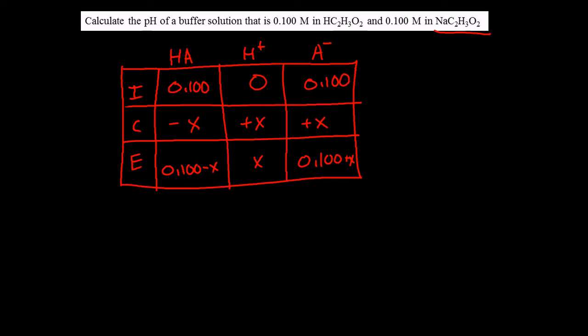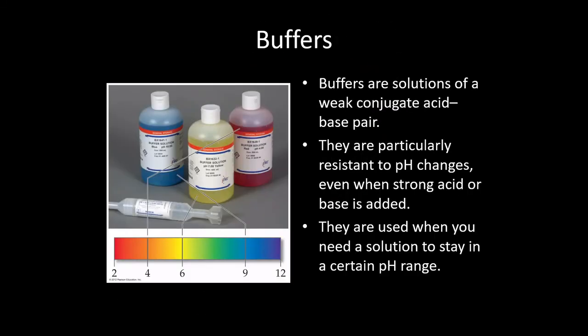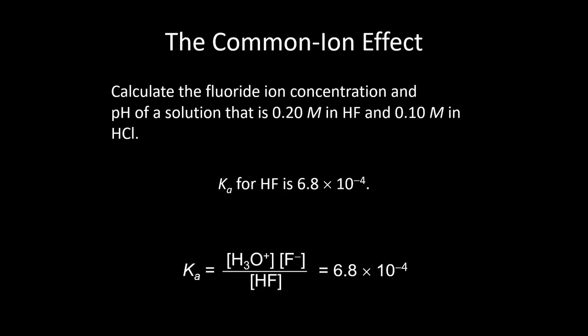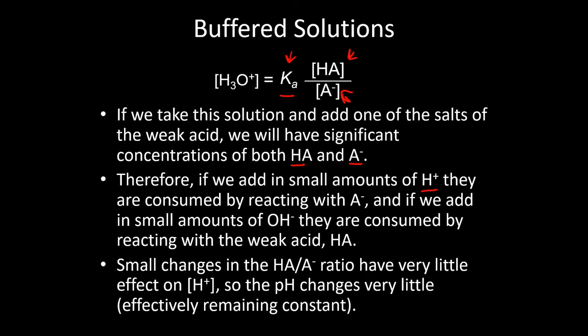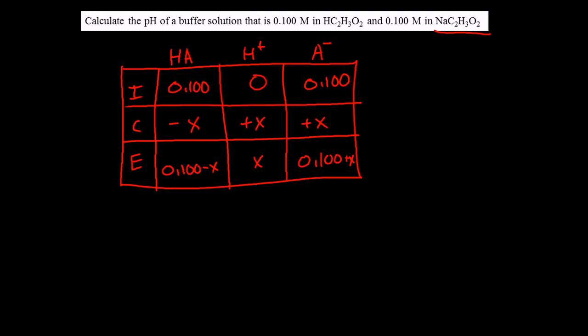The Ka value for acetic acid, I want to say it's like 1.8 times 10 to the negative 5, but I think it is listed back here somewhere. Let me find that here. I really should just have it listed in the question. Acetic acid. What did I say before? I think I actually got it right. 1.8 times 10 to the negative 5. So that is the Ka value for acetic acid.